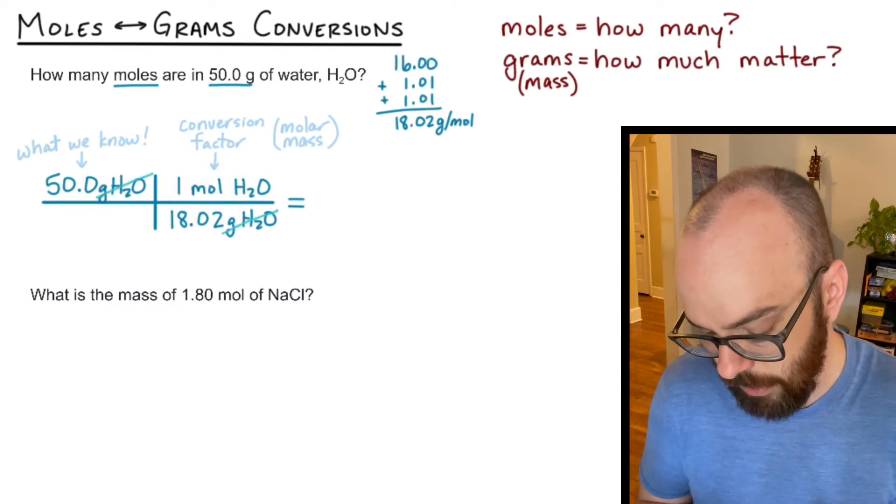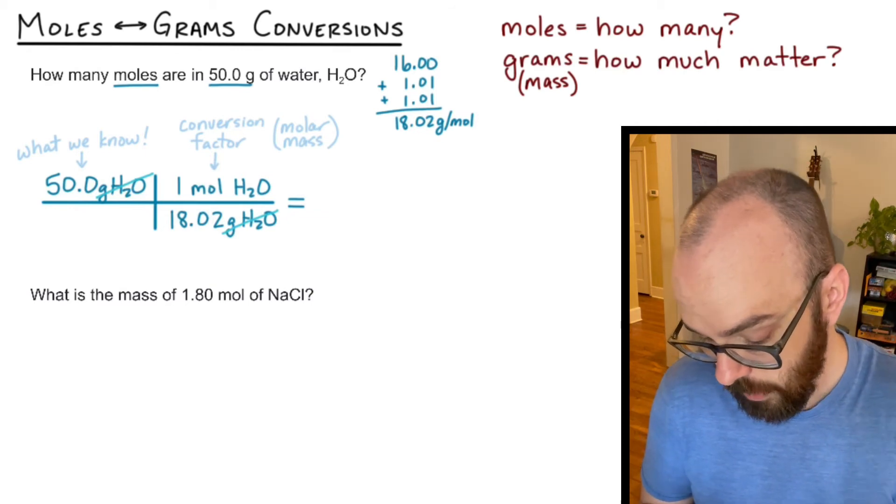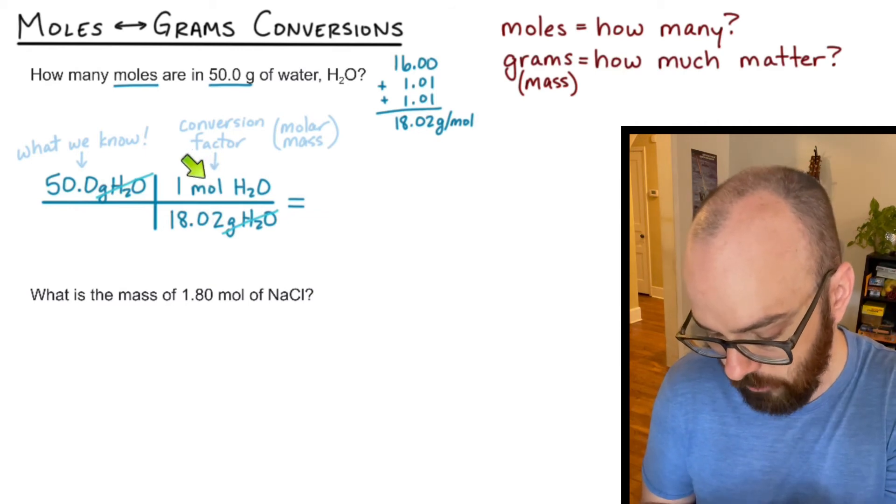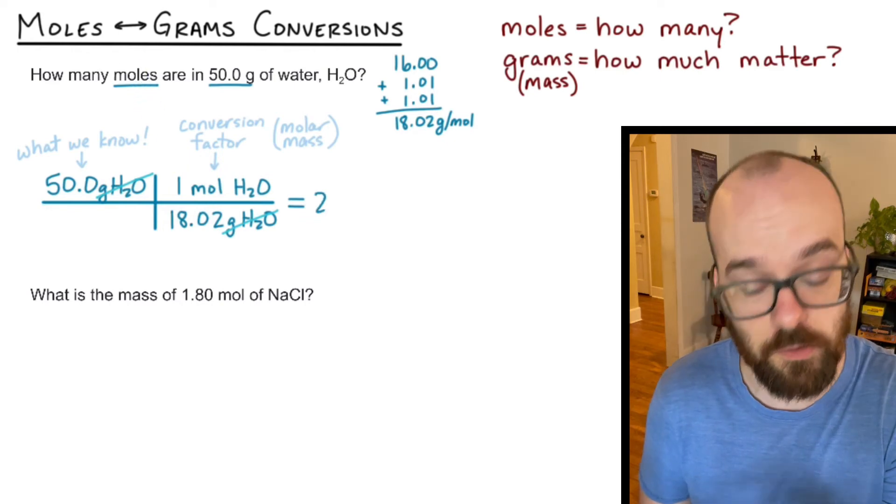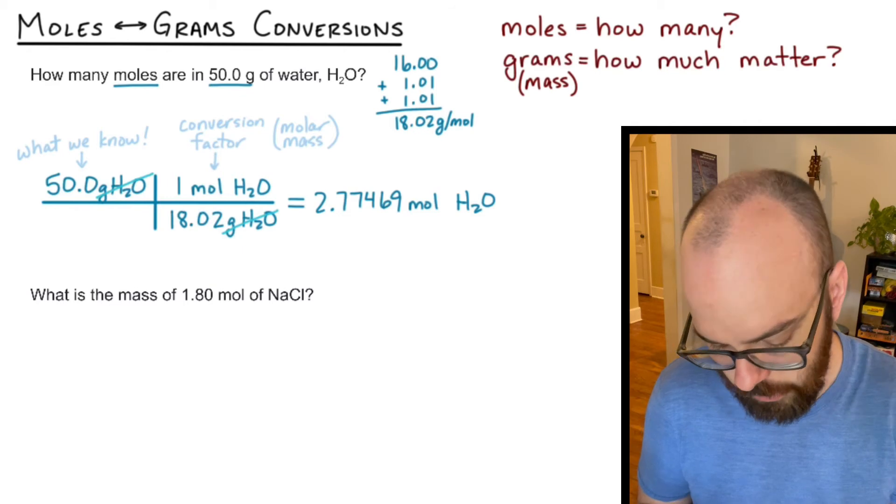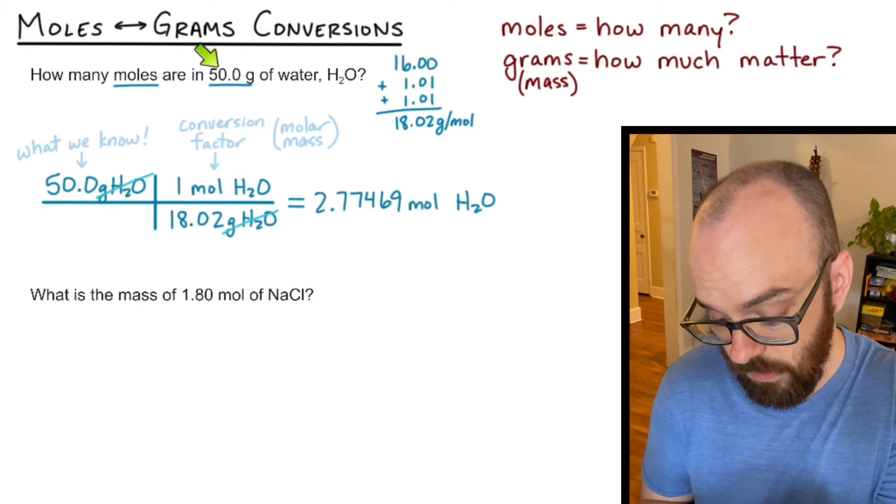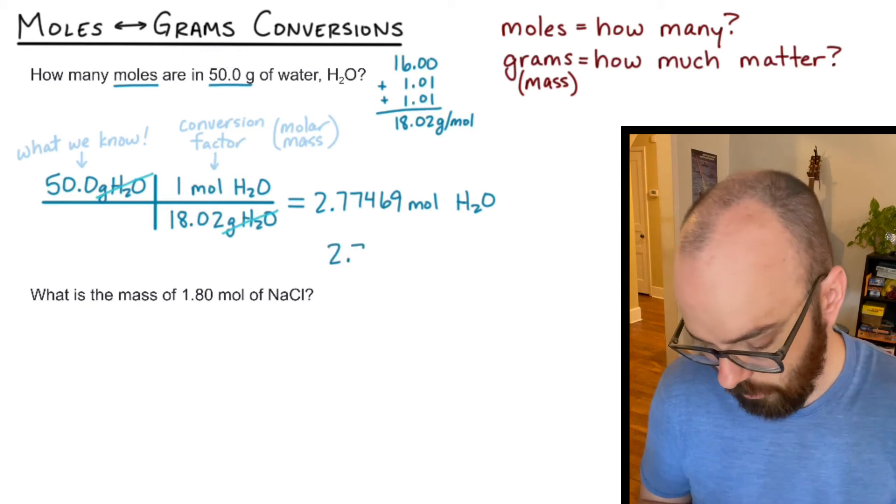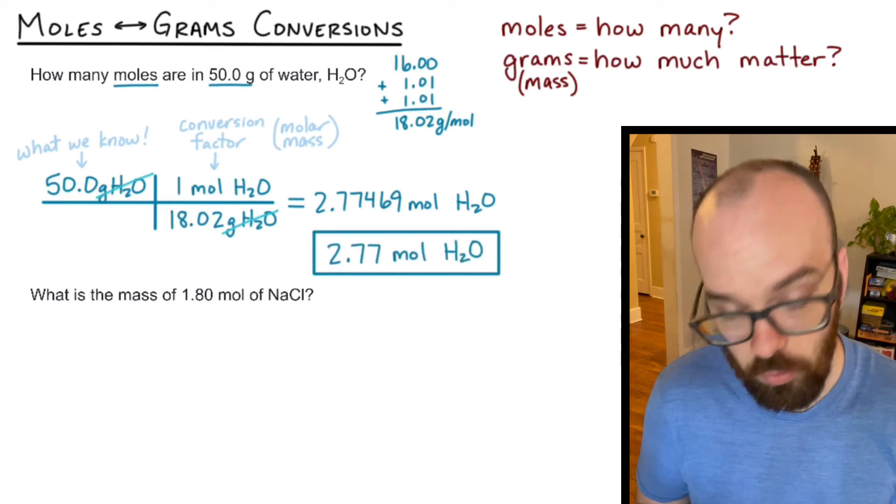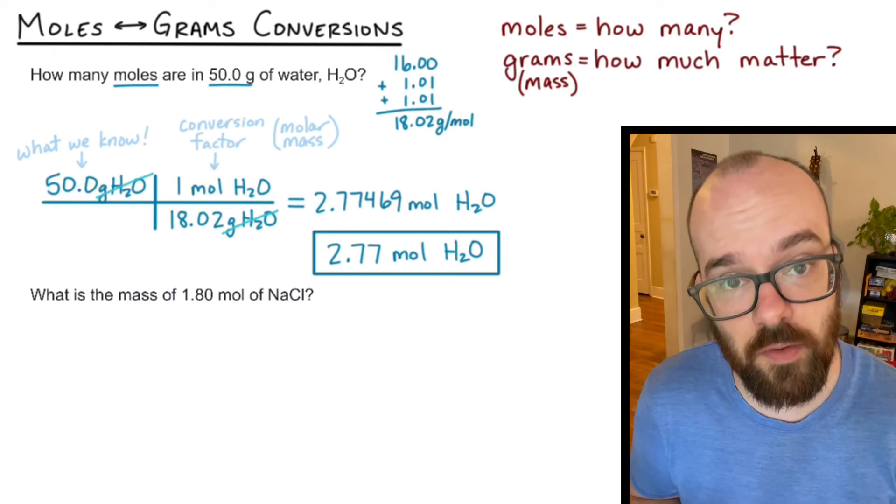And what that does is it means that the grams of water will divide out into one with the grams of water on the bottom. And I'm left with moles of water, which is what I want. That's what I'm trying to convert to. So I get 2.77469 moles of water in the calculator. And I get to keep three sig figs when I report out my answer because that's the fewest number of sig figs that I have in the problem. So I'm going to have 2.77 moles of water. So in other words, if I have 50 grams of water, that's 2.77 moles of water.